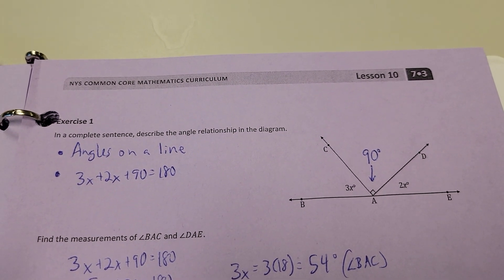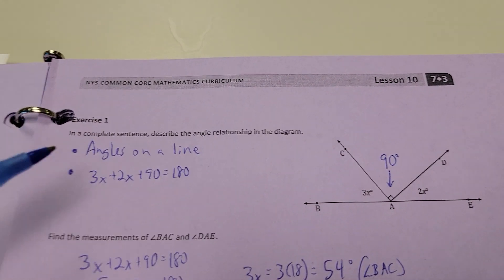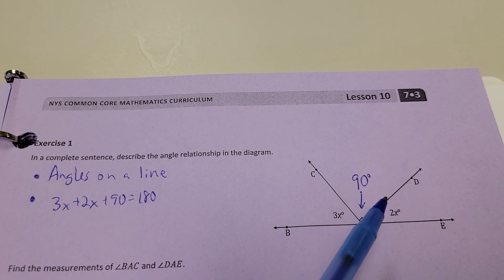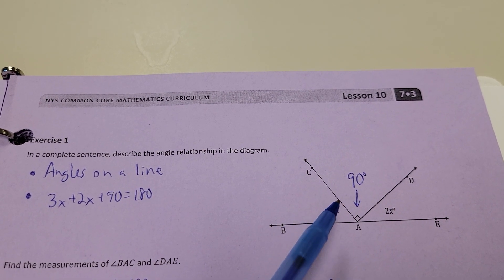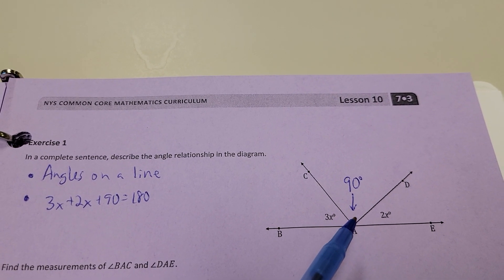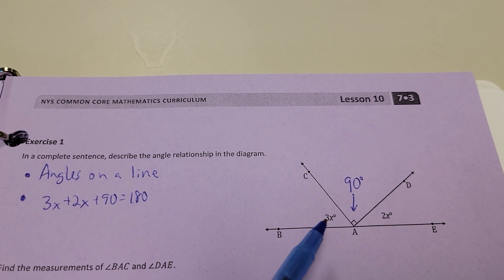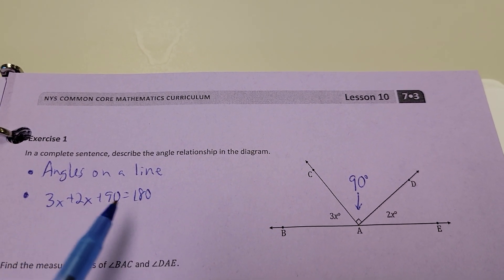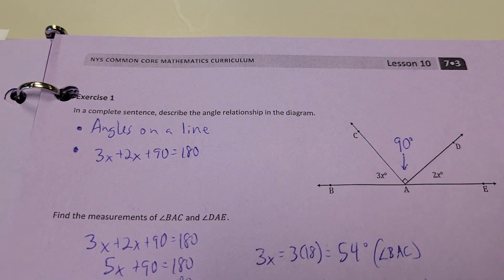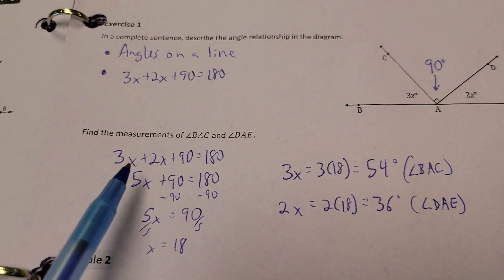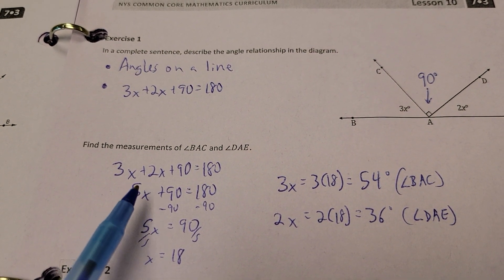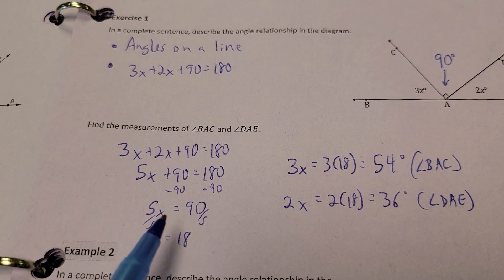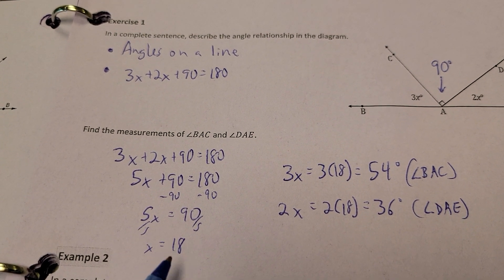In a complete sentence, describe the angle relationship in the diagram. We're not going to do complete sentences here. We'll get the point across to you. Now, I have one, two, three angles that form a straight line. And I know this measurement is actually 90 degrees because of that box. So, how do I get that? 180 degrees. Well, my X's, I've got 3X and 2X together plus this 90. All three of them put together equals 180. So, 3X and 2X gives you 5X. So, if you collect like terms, you get 5X plus 90 equals 180. Get rid of the 90 from each side. And I get 5X equals 90. And divide each side by 5. X equals 18.